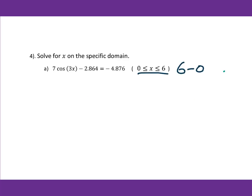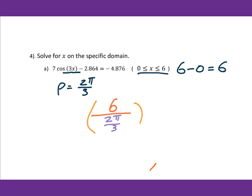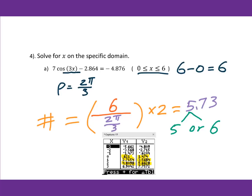For problem 4, the range is 6 minus 0 equals 6, and the period is 2π over 3. So we compute 6 divided by (2π/3), times 2, giving approximately 5.73. That means either 5 or 6 solutions. When we worked on this problem we got 6 solutions.